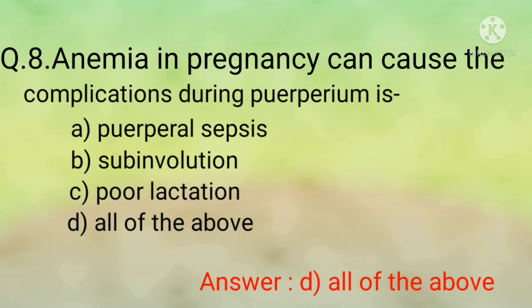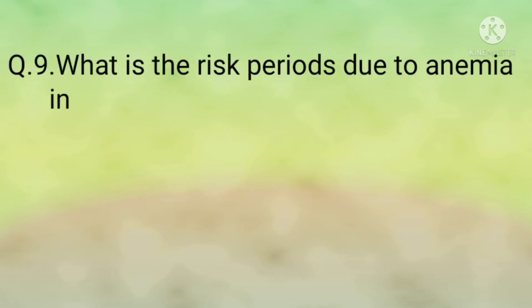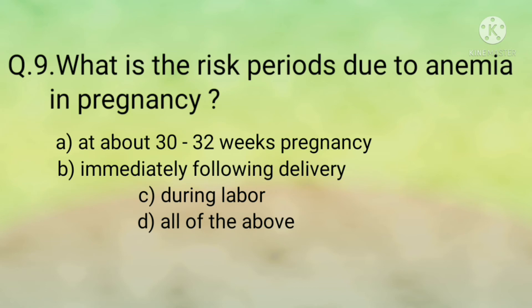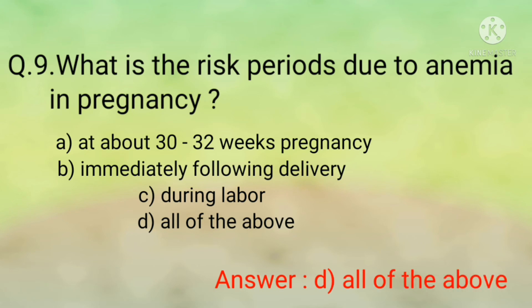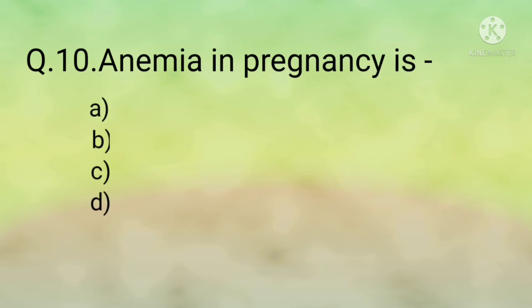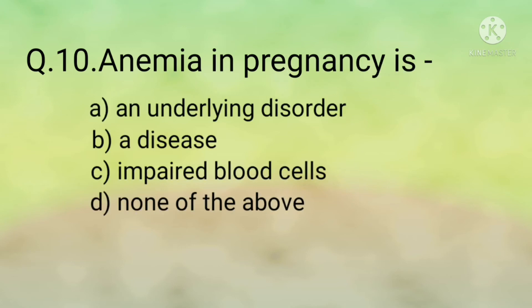Question number nine: What are the risk periods due to anemia in pregnancy? Options are: option A, at about 30 to 32 weeks of pregnancy; option B, immediately following delivery; option C, during labor; option D, all of the above. The correct option is option D, all of the above. These are the risk periods due to anemia in pregnancy, during which the patient may even die suddenly.